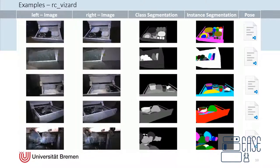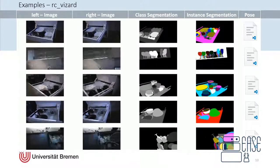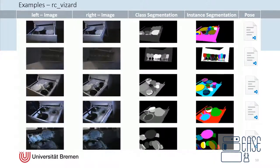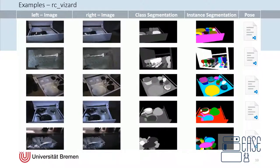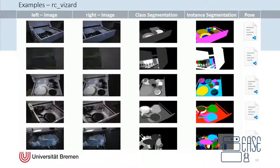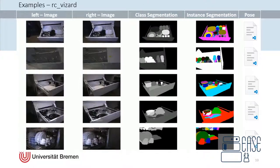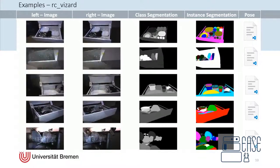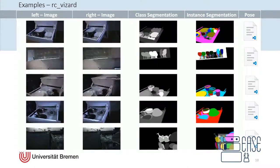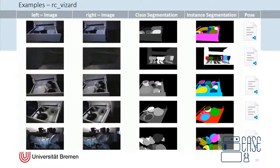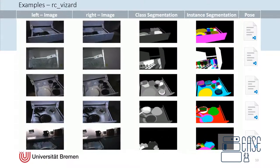On this slide, you get an impression, which images the RC Wizard camera provides. Instead of a color and a depth image, we have here a left and a right eye image. Of course, for each image, we again provide class segmentation, instance segmentation, and also the raw pose data. The RC Wizard camera would also provide a binocular-based depth image, but for far less frames, and therefore it's not shown here.